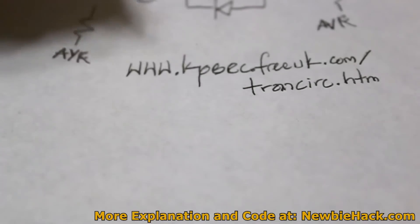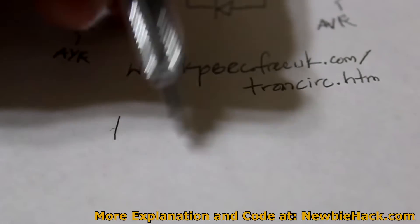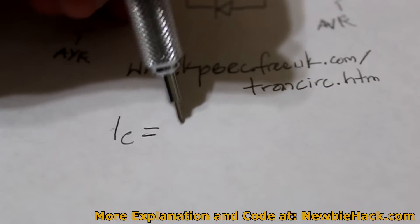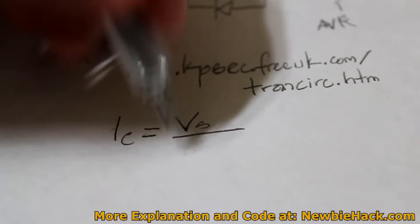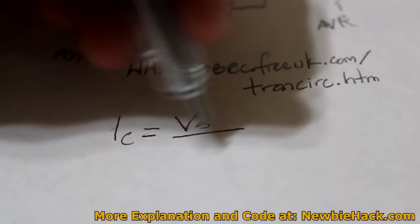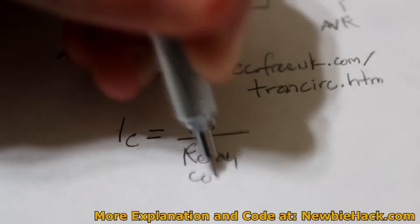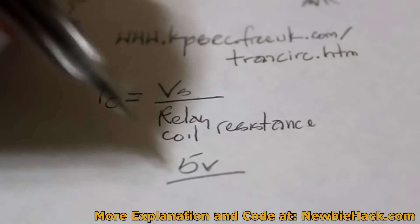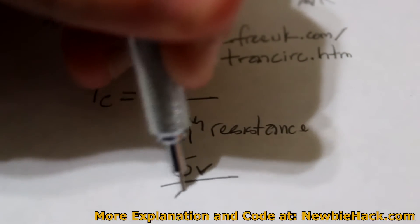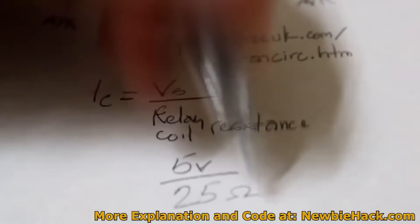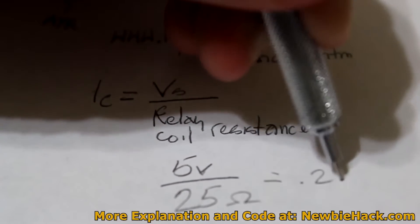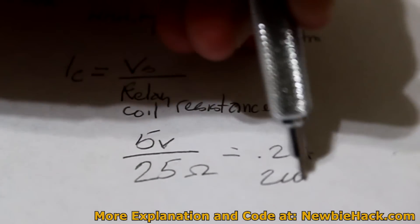The first formula is just Ohm's Law. The load current is going to be equal to the supply voltage over the load resistance, which is the resistance of the coil or the relay. So we know the voltage is 5. The relay that I'm using has a coil resistance of 25 Ohms. This equals 0.2 amps or 200 milliamps.